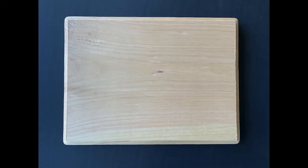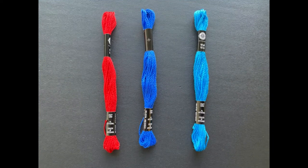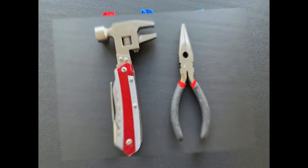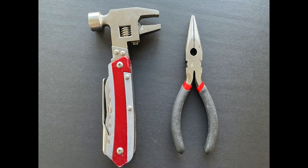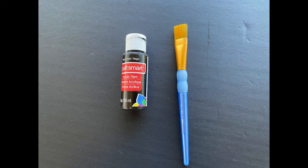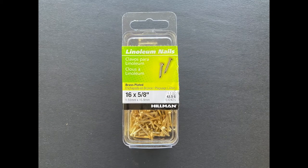Materials required for this project are: a wooden board, 9x12 size, embroidery floss in red, dark blue and light blue, hammer and pliers, black acrylic paint and a brush, and linoleum nails 6x5x8 inch.